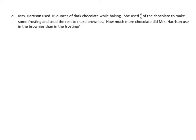Let's read this one. Mrs. Harrison used 16 ounces of dark chocolate while baking. She used 2 fifths of the chocolate to make some frosting and used the rest to make brownies. How much more chocolate did Mrs. Harrison use than in the frosting? So we're going to start with fractional parts and go on to working with actual numbers to subtract here in terms of ounces. We know that the whole is 16 ounces.